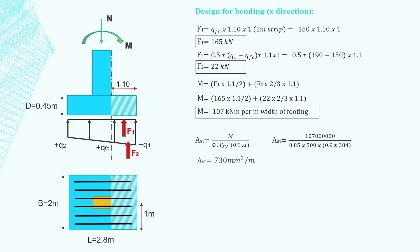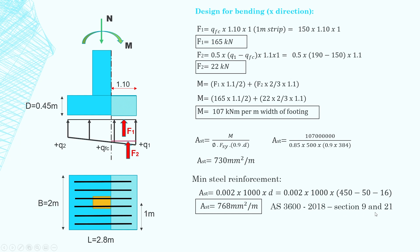We plug the numbers into this equation here and find that the area of steel needs to be 730 millimeters squared per meter. As per the code, there is a minimum steel reinforcement for footings. We need to work out this minimum steel reinforcement in order to know if it's going to be greater than 730. So if it's greater than 730, we need to adopt the minimum steel. As per the code, there's a minimum steel reinforcement for footings, which is around 0.2% times one meter times the effective depth. That works out to be 768 millimeters squared per meter. And this formula comes from section 9 slabs and section 21 footings in AS3600 2018. For this area of steel, we need N16 at 250 centers.